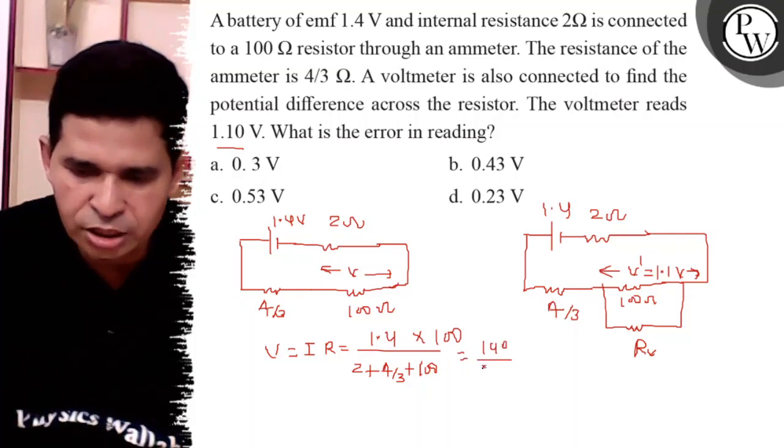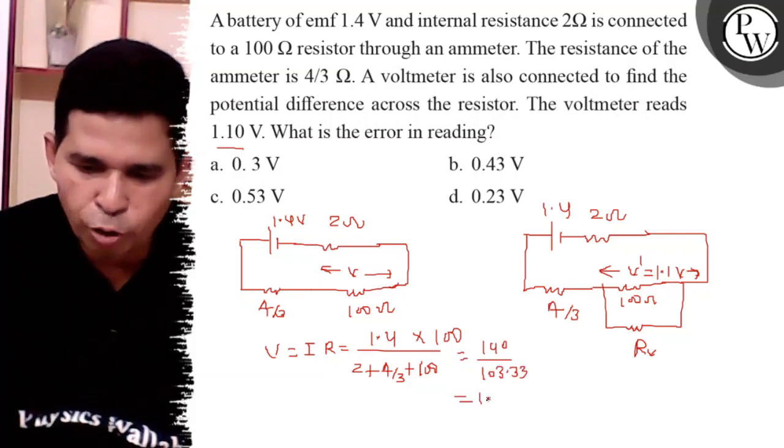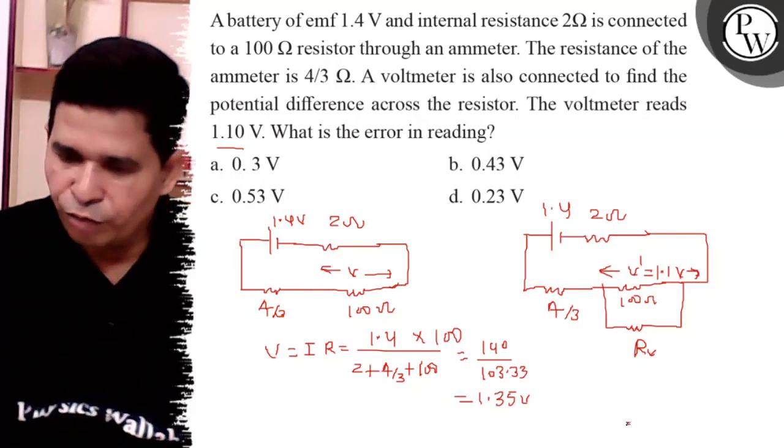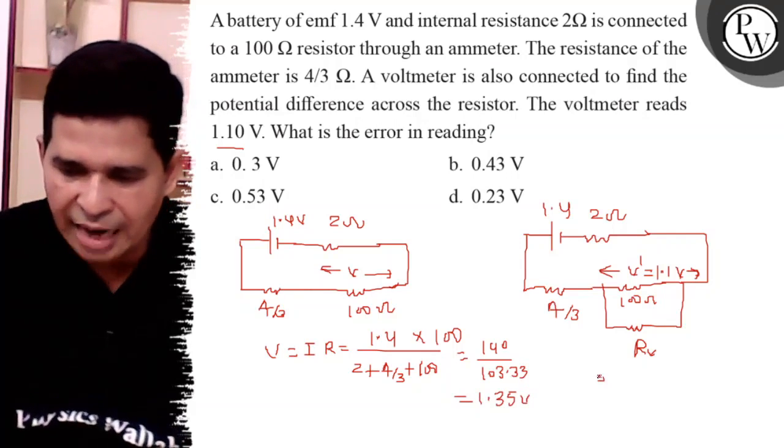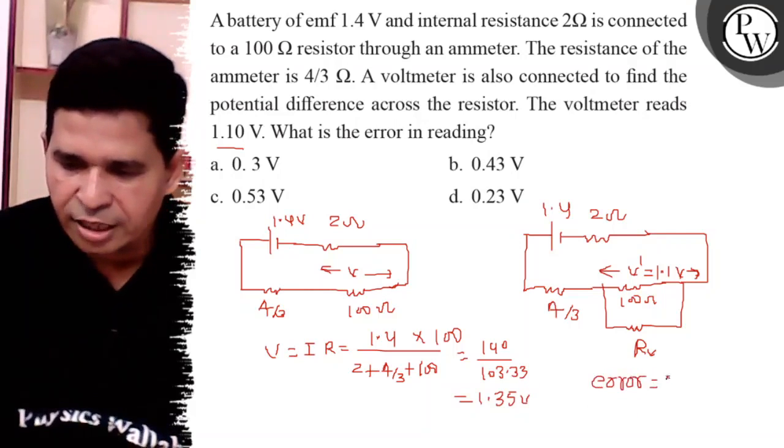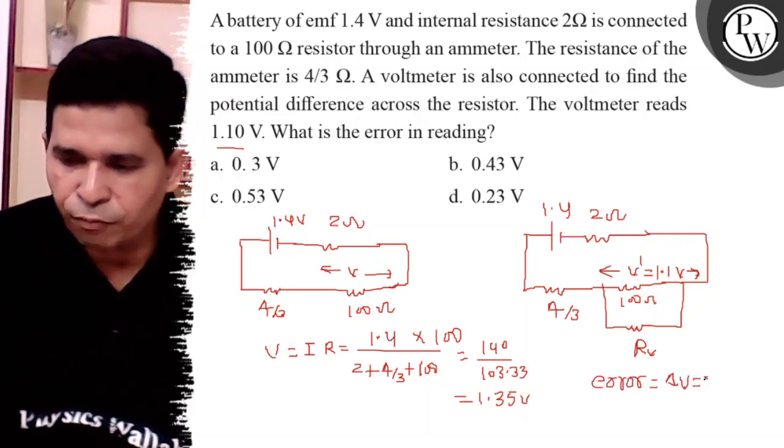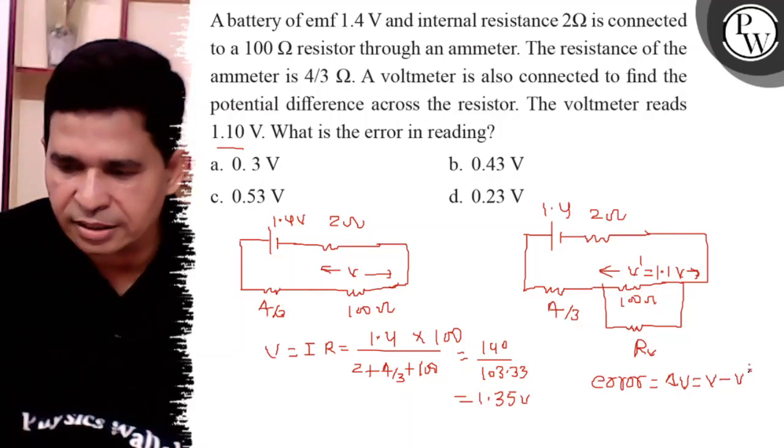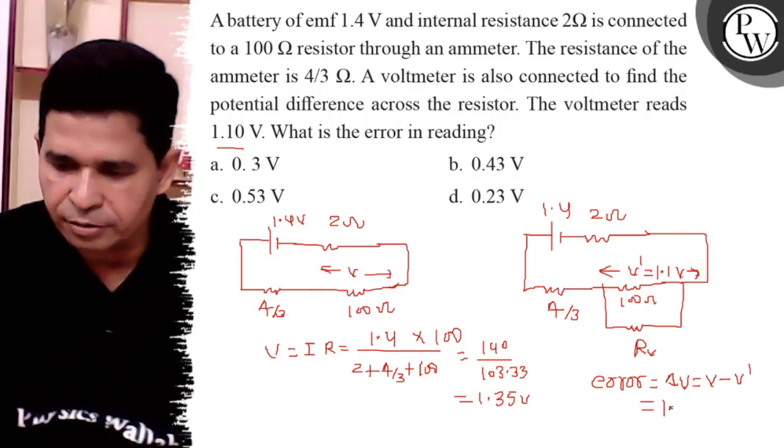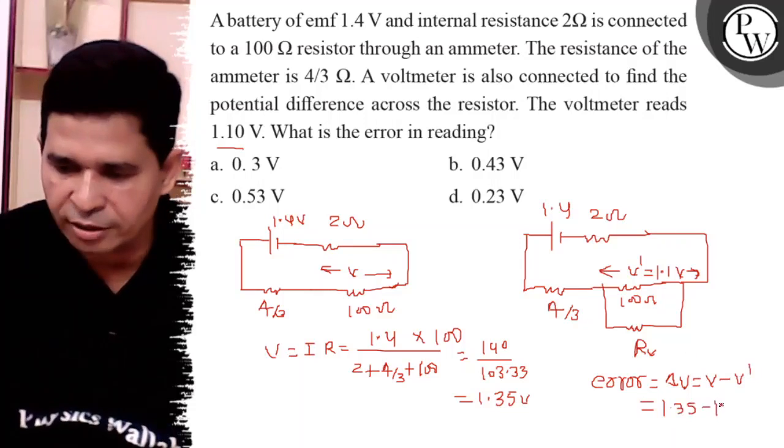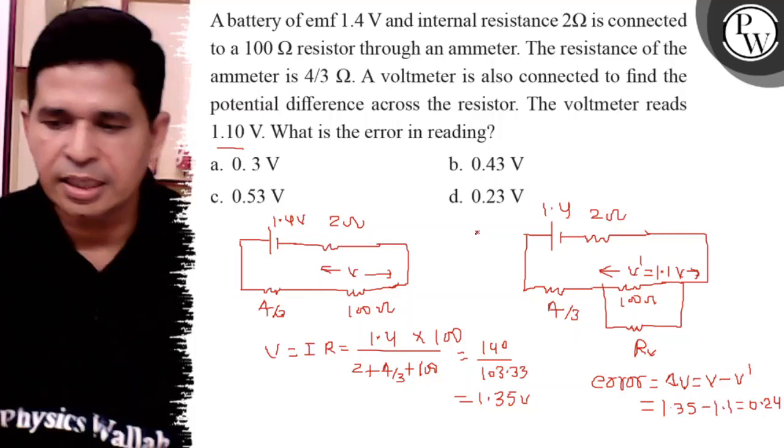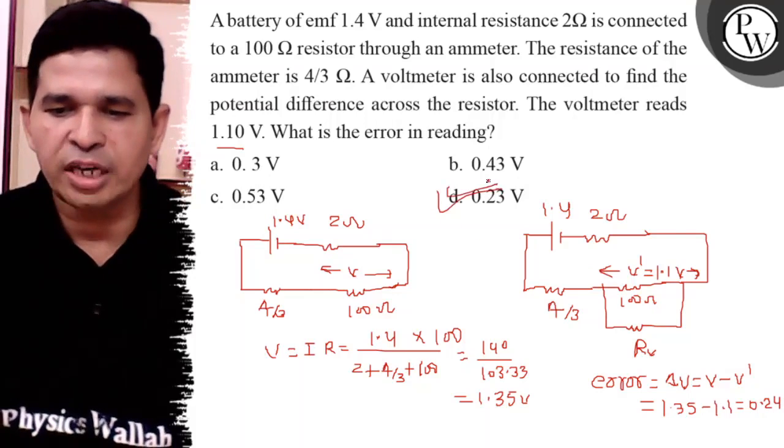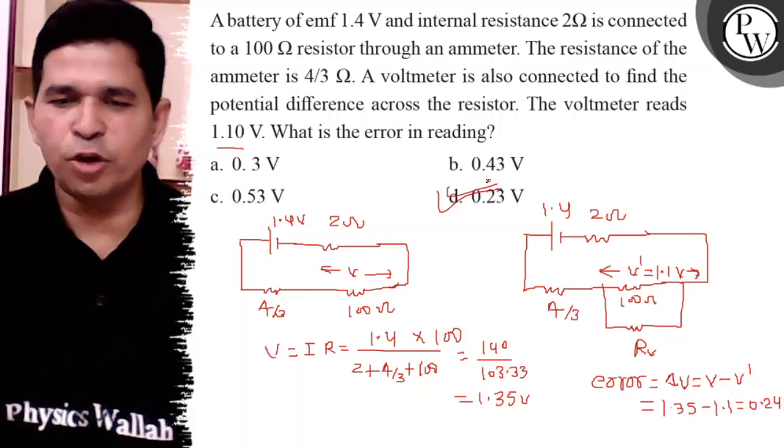So it is 1.35 volt approximately. V minus delta V, the error is delta V equals V minus V dash. So 1.35 minus 1.1, which is 0.25, approximately. The answer is d, 0.23 volt. Thank you, all the best.